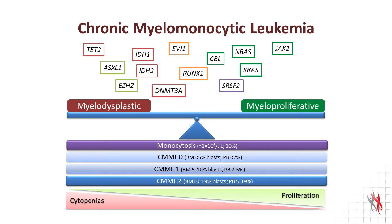CMML is a complex disease. It is defined as a disease with both myelodysplastic and myeloproliferative features, in which monocytosis — an increase in the relative and absolute monocyte count — is a hallmark feature.